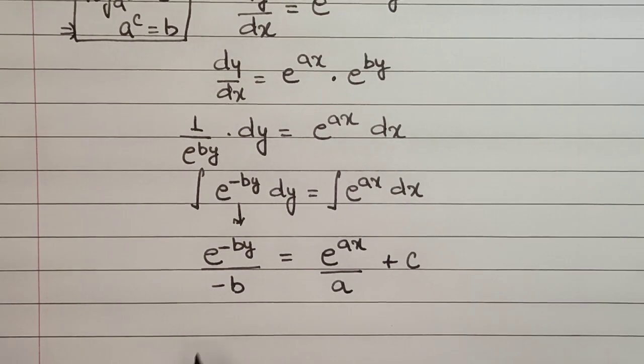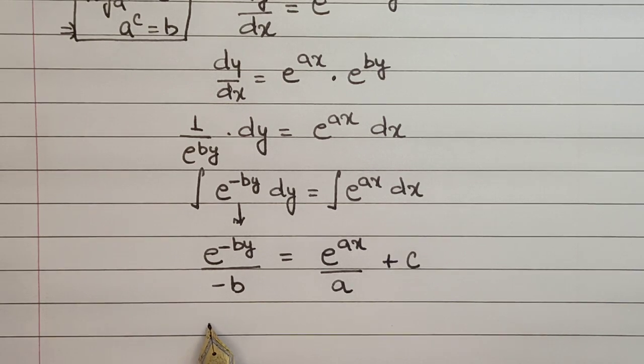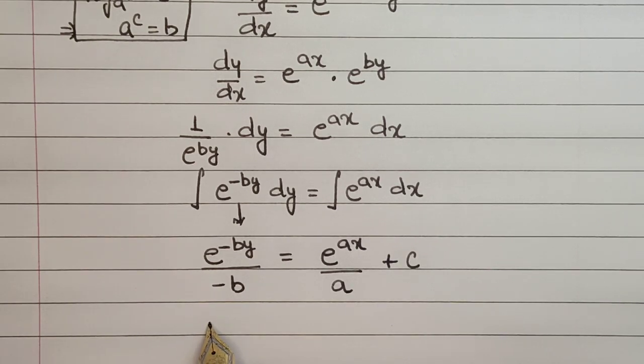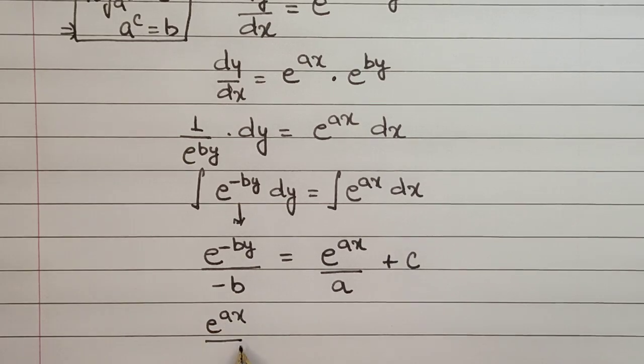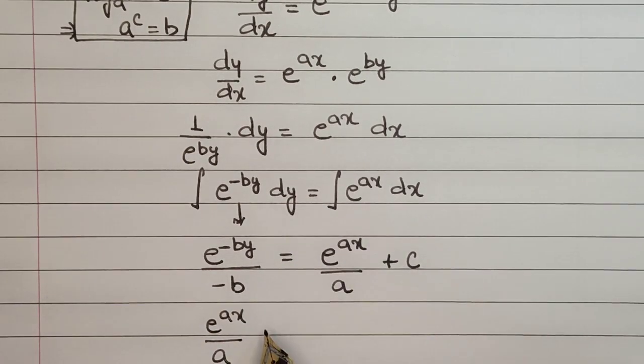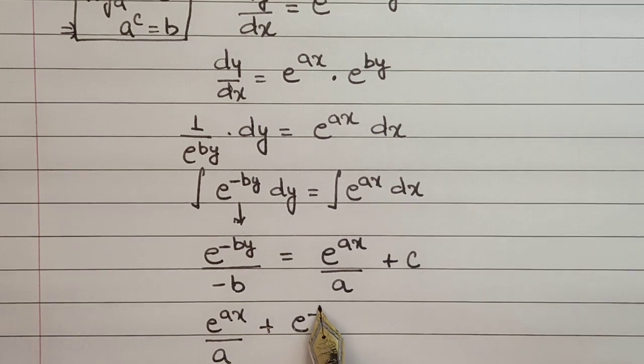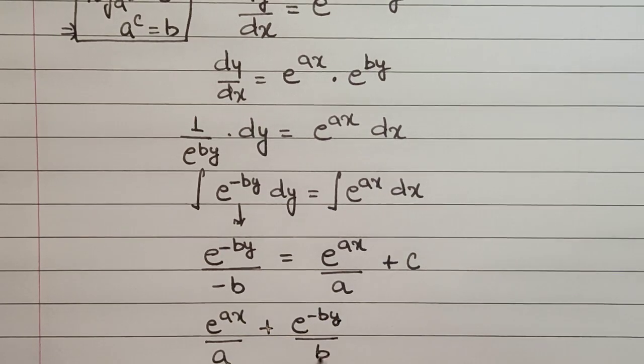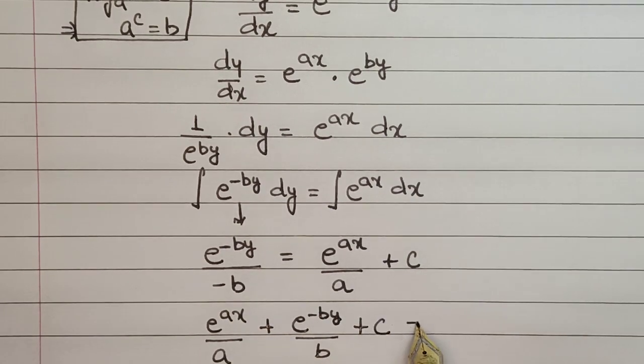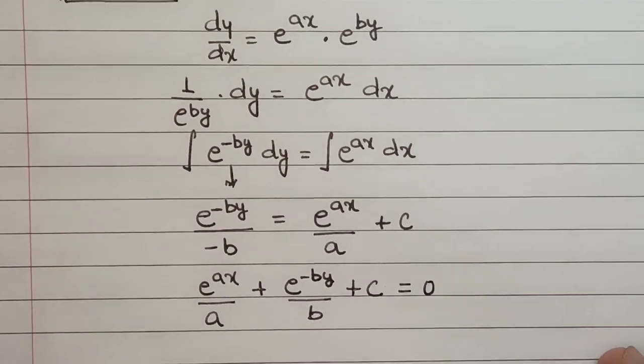Let us shift all this to one side. So this will be e^(ax)/a plus e^(-by)/b plus c equals 0.